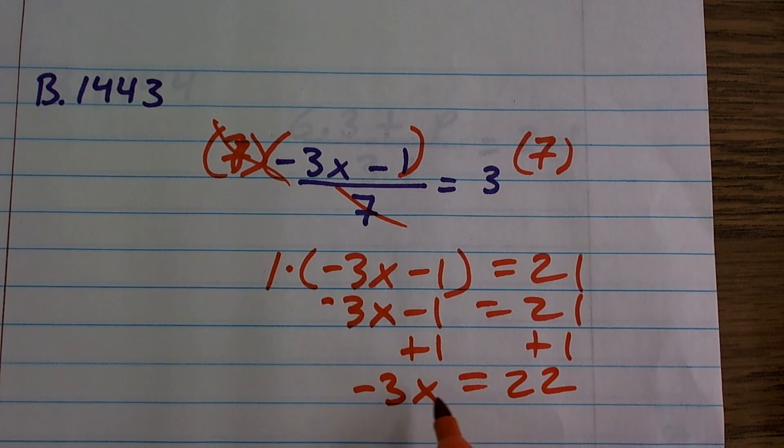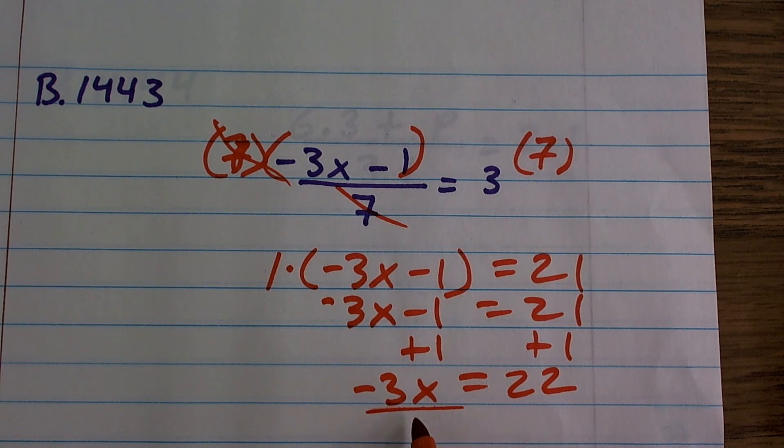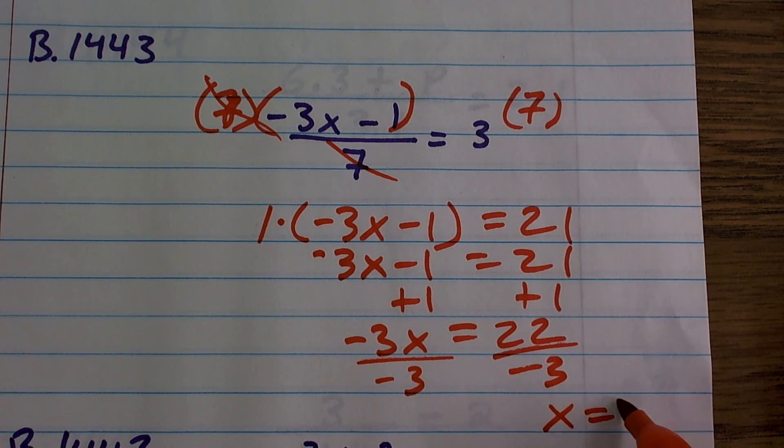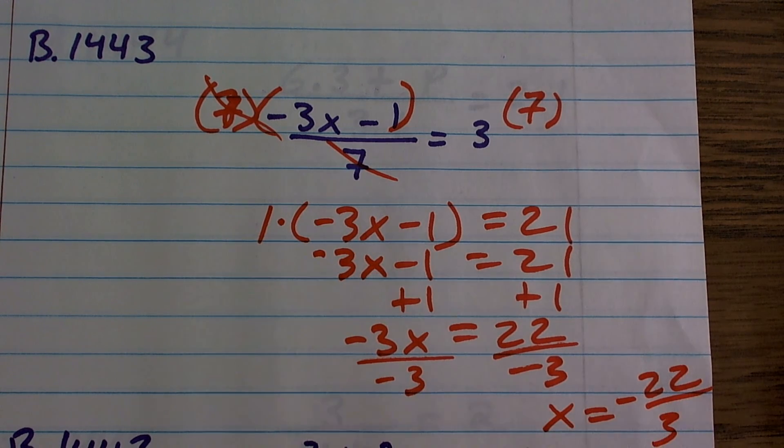Then I'll just undo division by negative 3. So I'll undo multiplication by negative 3 by dividing by negative 3 on both sides. Therefore, my final answer is going to be x equals negative 22 divided by 3.